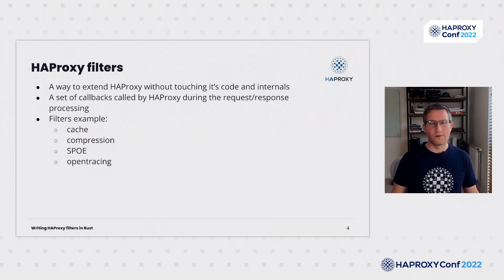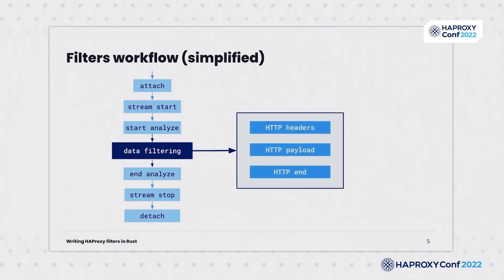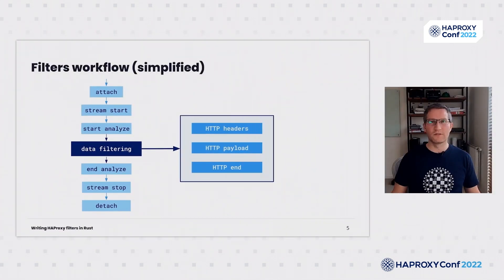A filter can implement all or part of those callbacks. An example of functionality added using filters is HTTP compression, distributed tracing, stream processing of a load engine, and so on. On this slide we can see a very simplified filter workflow. For example, attach is called after a filter instance creation when it's attached to a stream. At this stage it's possible to ignore the filter if needed. Stream start is called when a stream is charged, and so on. The most important part is data filtering. By default, filters do not look into data exchange between the client and the server because it's too expensive. Instead, filters must register the interest by calling a special function called registerDataFilter. HTTP data filtering is more complex because inside HAPROXY the data are structured and represented through an internal format called HTX.